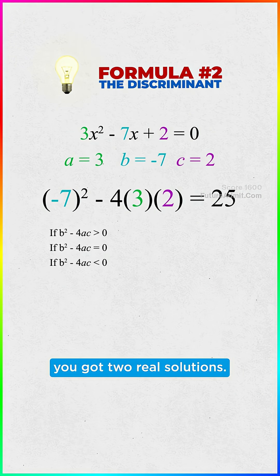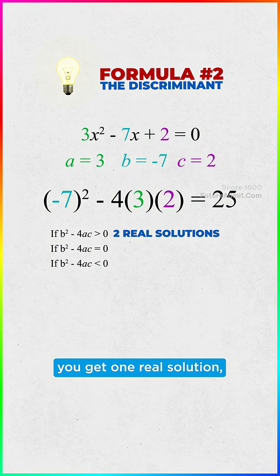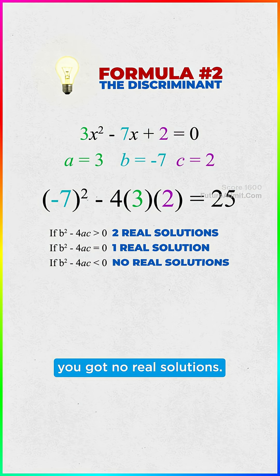If the result is positive, you got two real solutions. If the result is equal to zero, you get one real solution. And if it's negative, you got no real solutions.